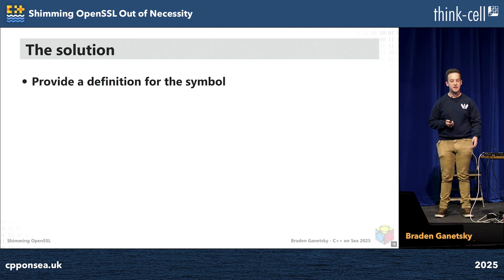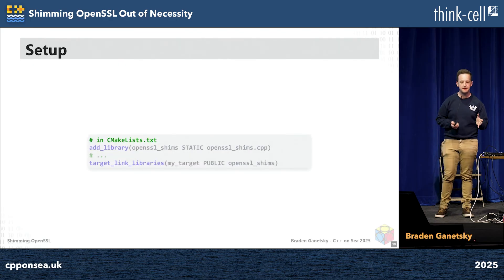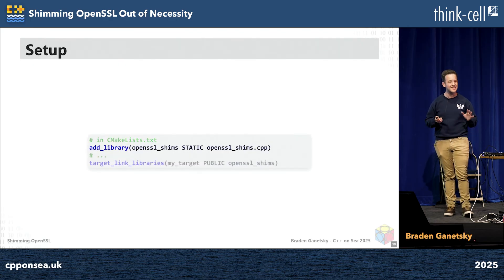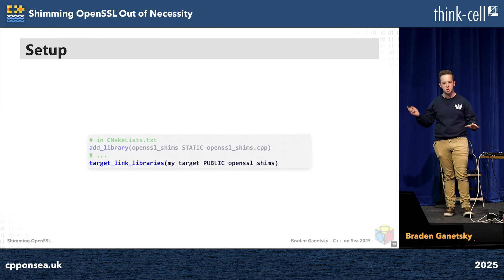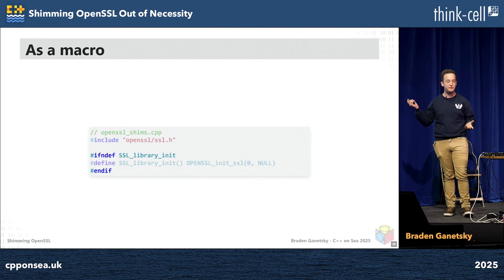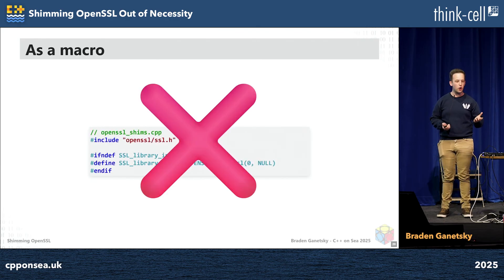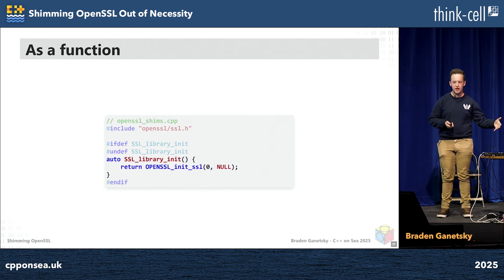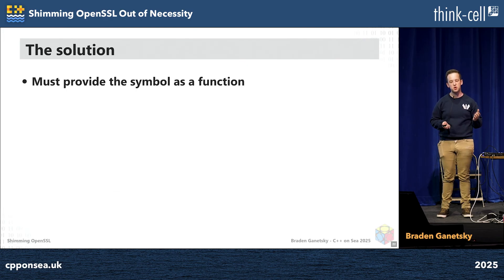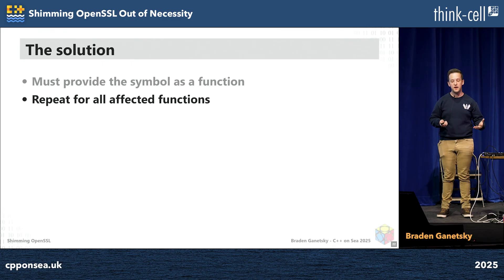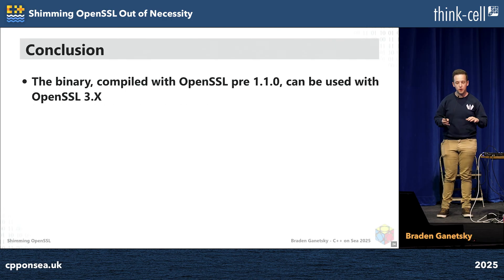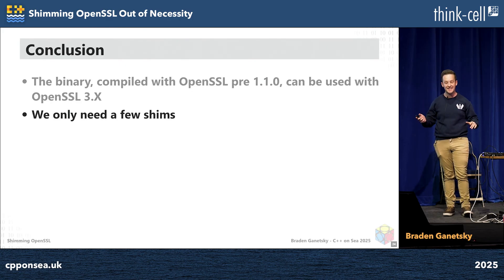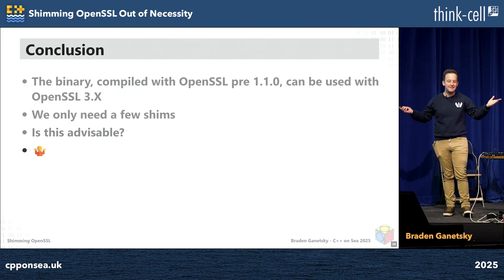The solution is to provide a definition for the symbol as a function. Here's the setup in CMake — I'm just creating the simplest possible thing: a library with a single source file, and then linking it against what I need. As simple as can be, I'll make this shims library. As a macro, if it's not defined, I'll define it. But we actually need to have the symbol in the library, so as a function: if it is defined, then undefine it, and then make the function. Now it'll be in the binary — we're just creating a shim. We must provide the symbol as a function and repeat for all the affected functions. In conclusion, a binary compiled with OpenSSL pre-1.1.0 can be used with OpenSSL 3.x. We only need a few shims. Is this advisable? Eh. But it works for now. Thanks so much.